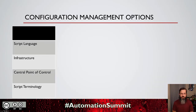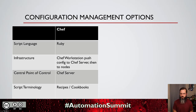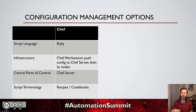Moving on to our configuration management options, with a similar comparison covering scripting language, infrastructure involved, point of control, and terminology. The first one is Chef, which is mainly based in Ruby. You have your Chef workstation that takes the configuration as you write it, pushes it to the Chef server, and then the Chef server configures the nodes with whatever you need. The Chef server is the central point of control. The script terminology is fun because it plays off the company name: cookbooks are your descriptions, those roll up into recipes, and recipes are pushed out to the nodes to apply different configurations.